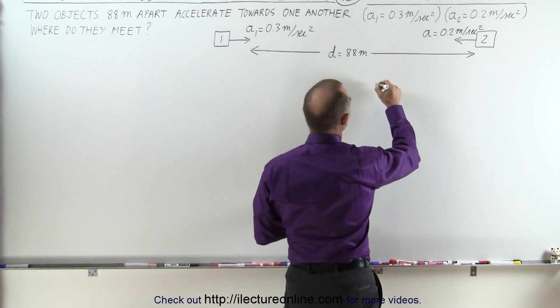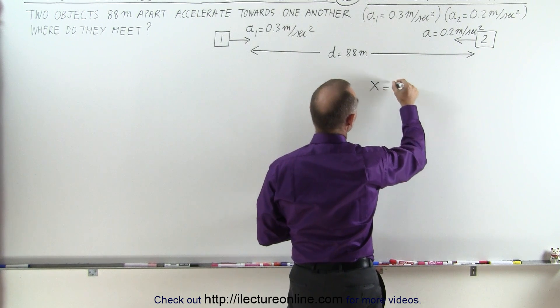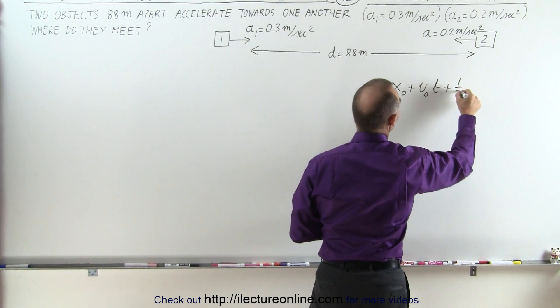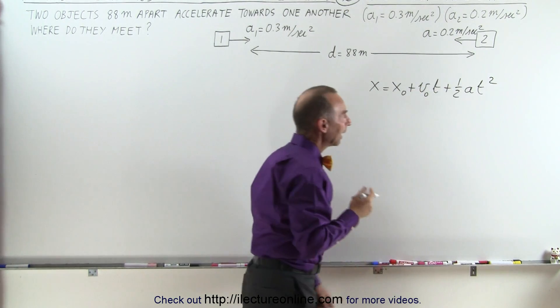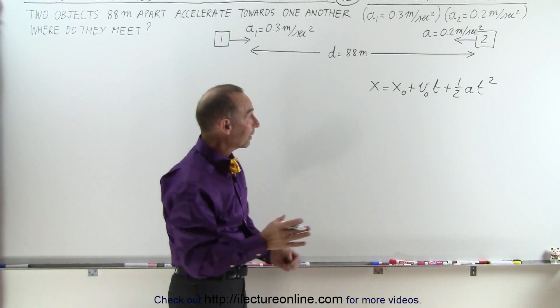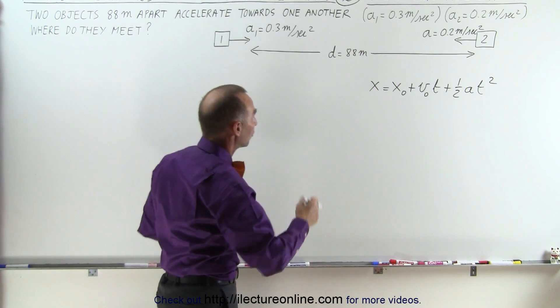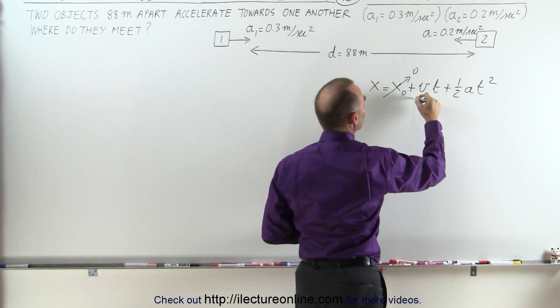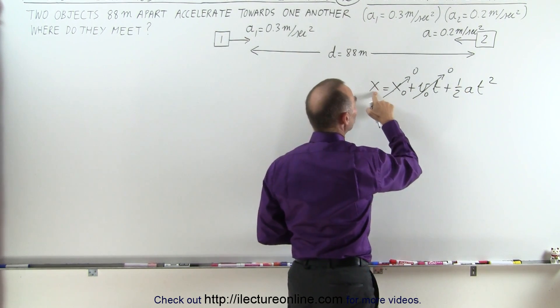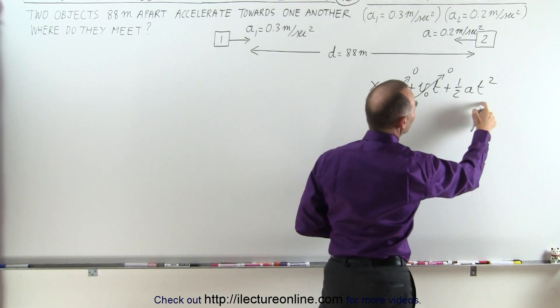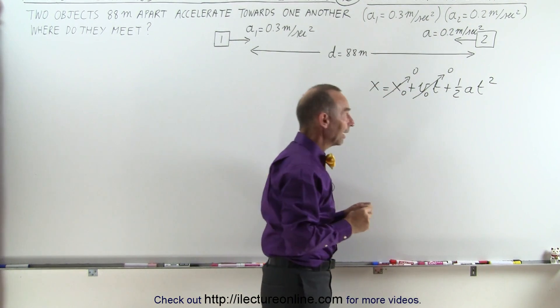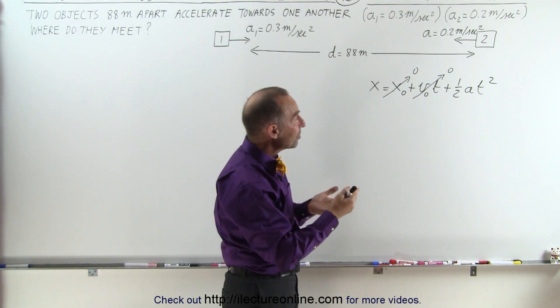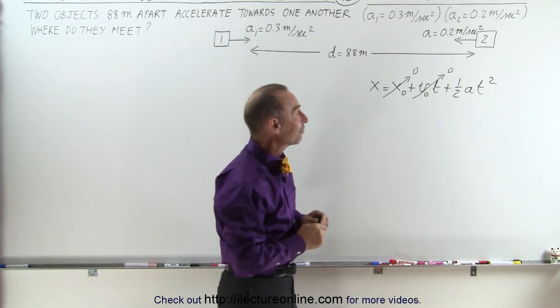So let's start with x or distance traveled equals x₀ plus v initial times t plus one-half a t squared. Notice that if we assume that they have not traveled any distance at time equals zero, which is a correct assumption, we can call this equal to zero. There's no initial velocity, so the distance traveled for each will be equal to one-half a times t squared. Notice that a is known and t, well that will be unknown but will be at least the same time for both.